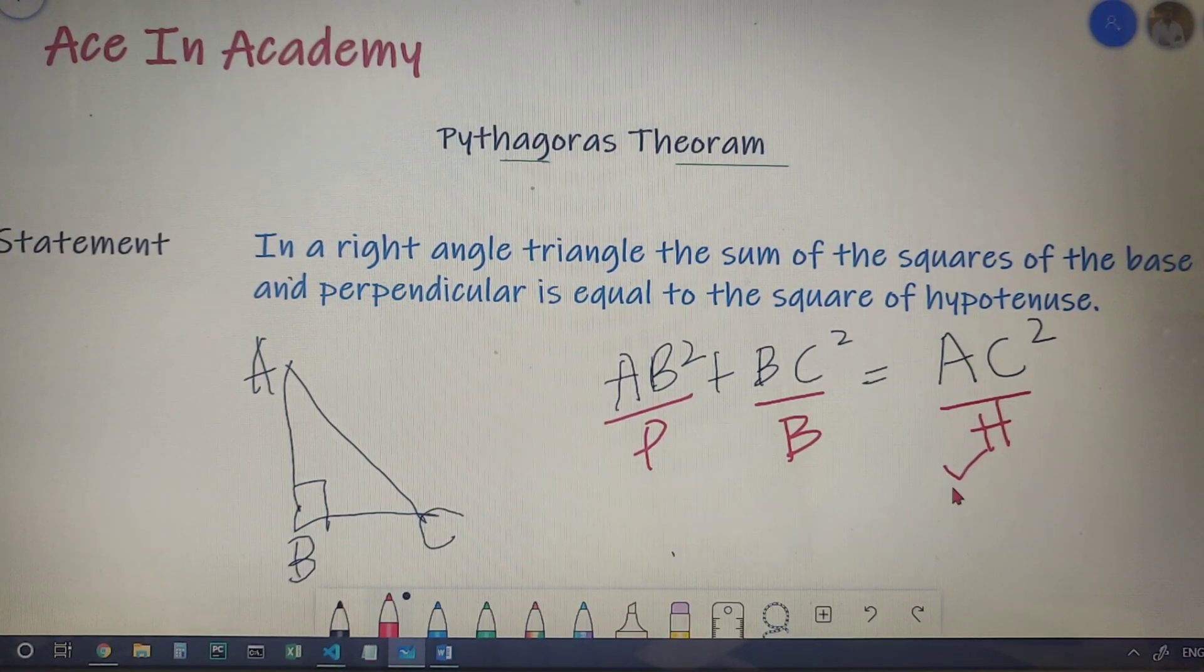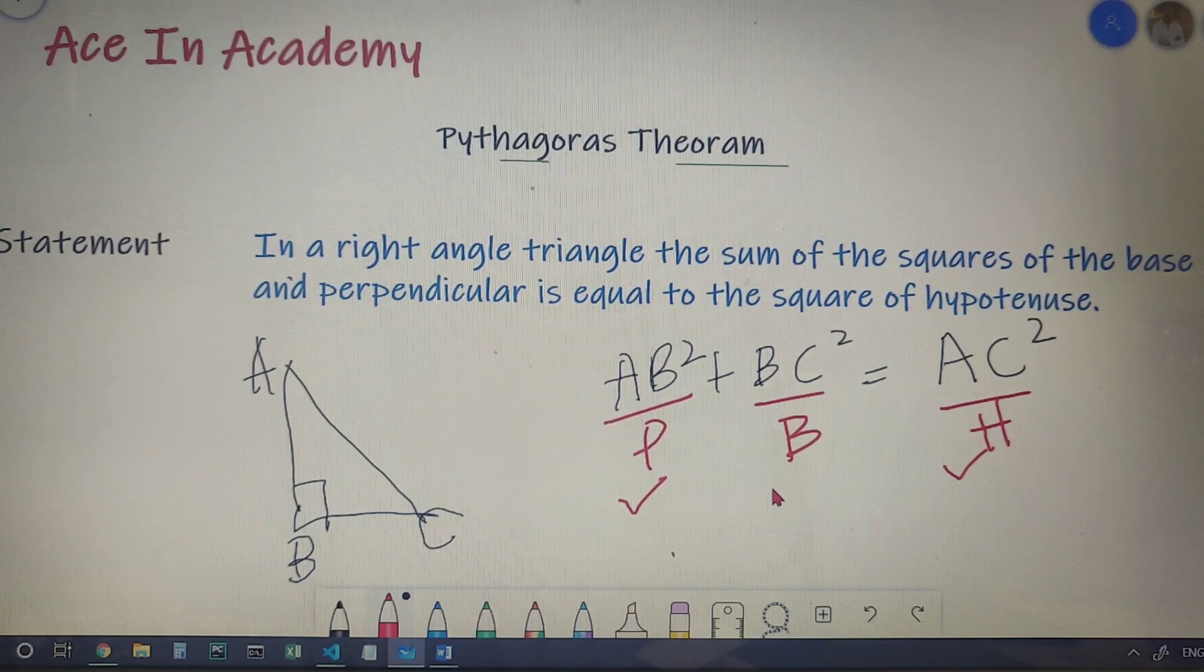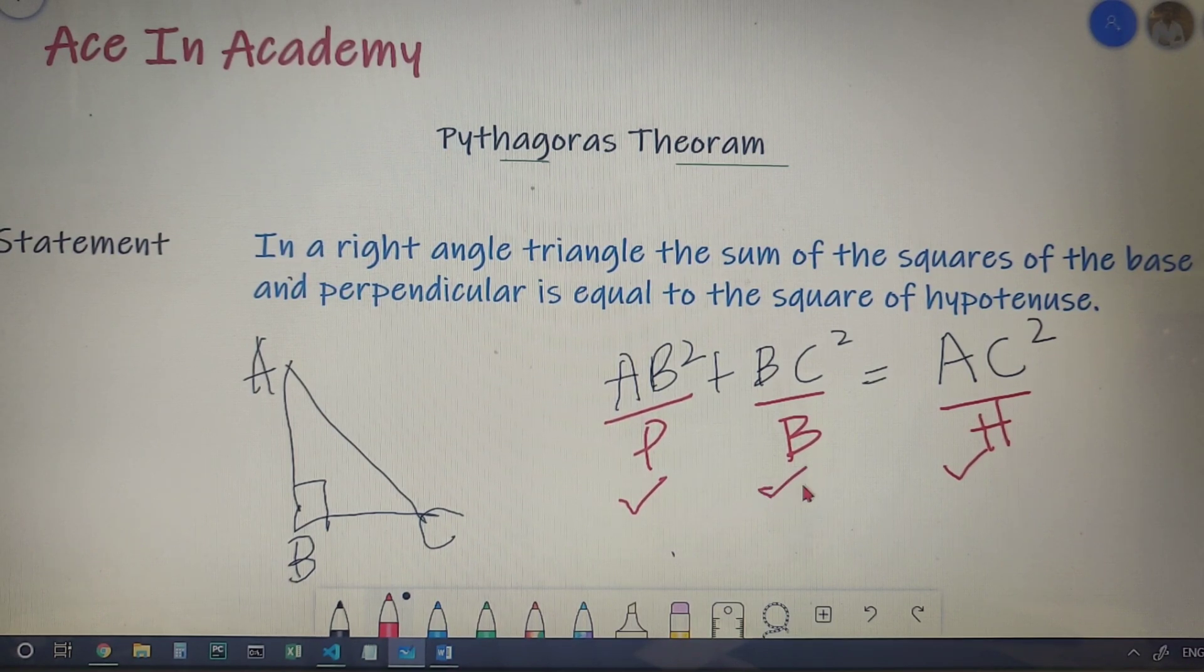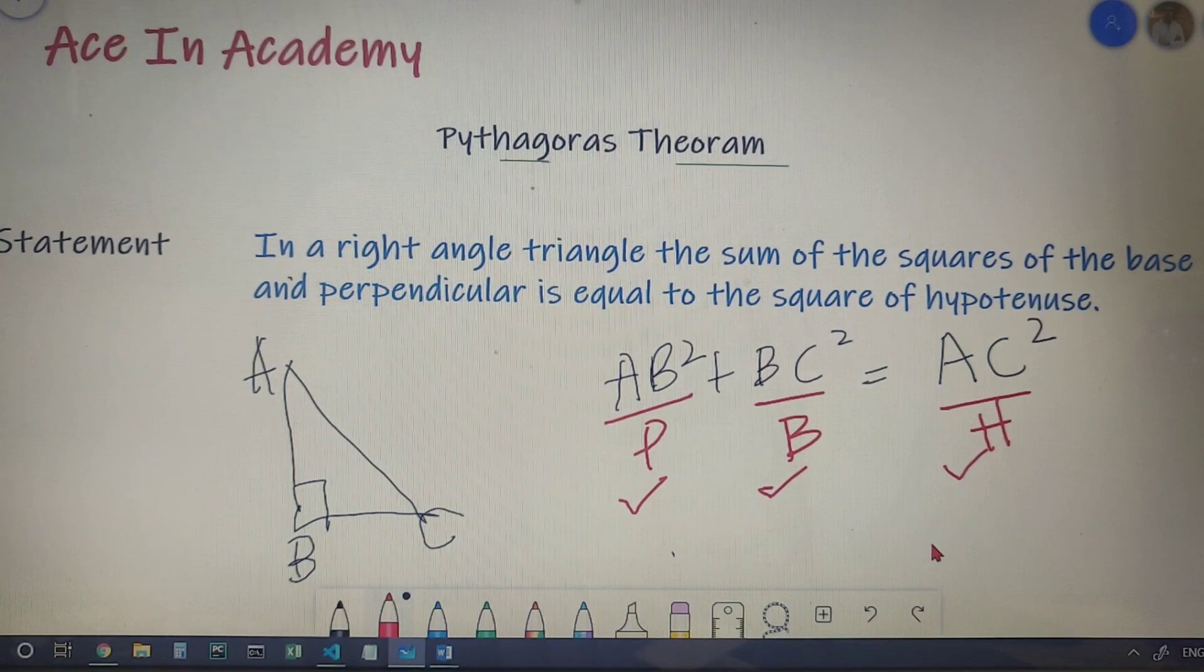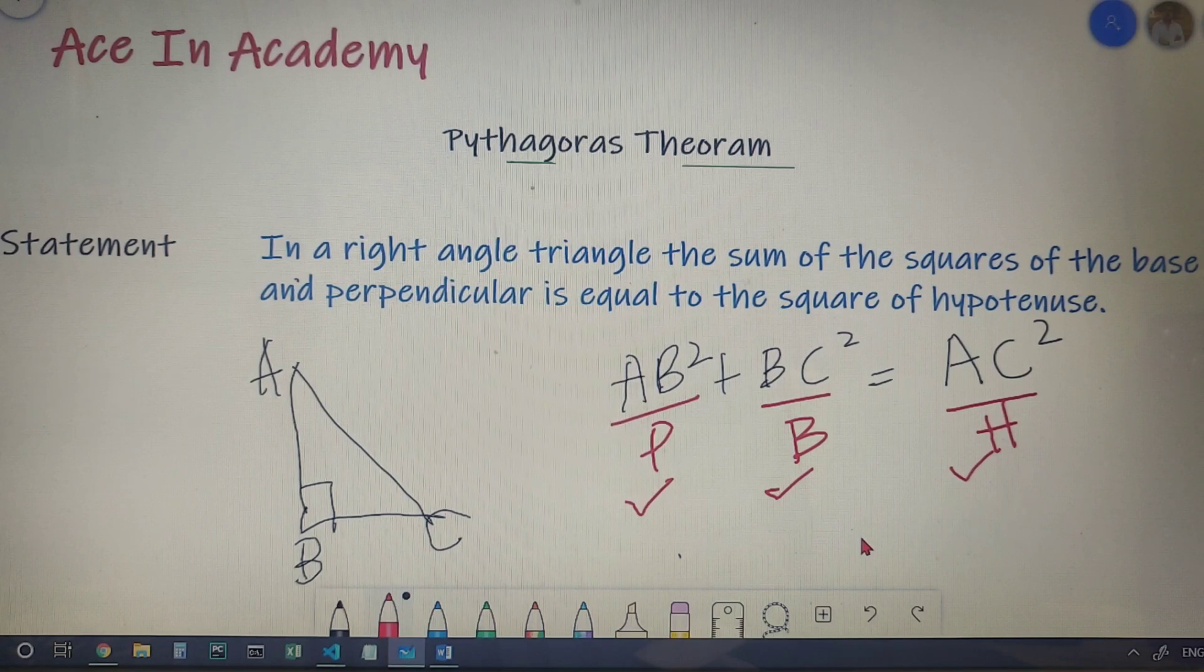The side opposite to the hypotenuse is the perpendicular, and the remaining third side is the base of the right-angled triangle. I hope that you got what is Pythagoras theorem, but if you didn't, then let us check the proof of Pythagoras theorem and it will surely be clear to you.